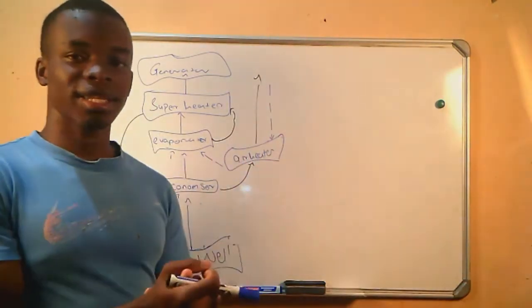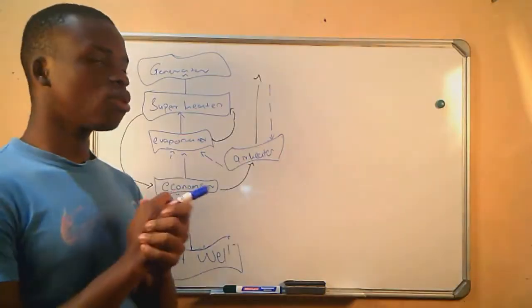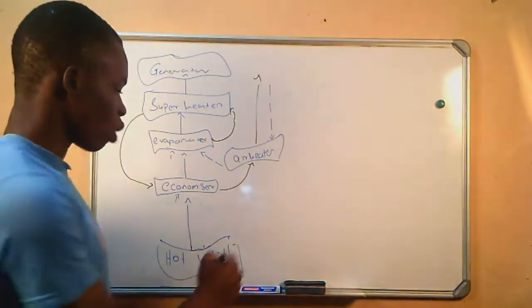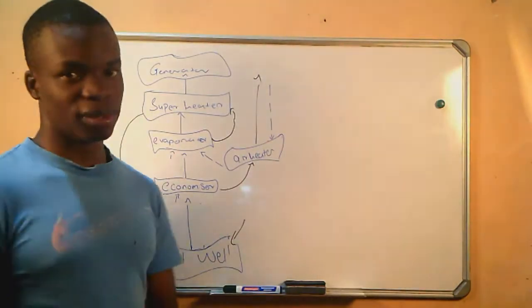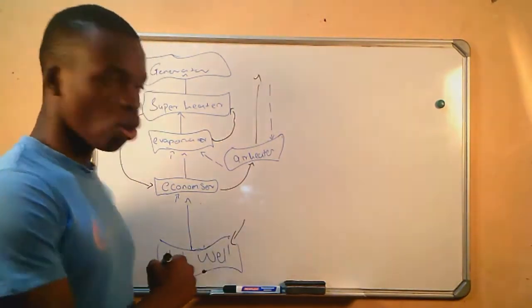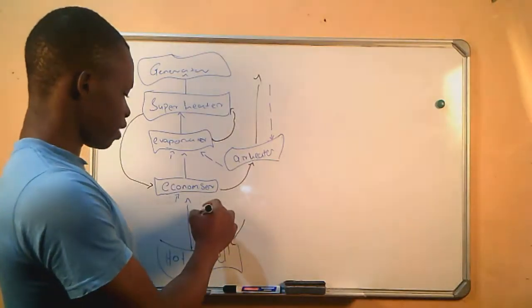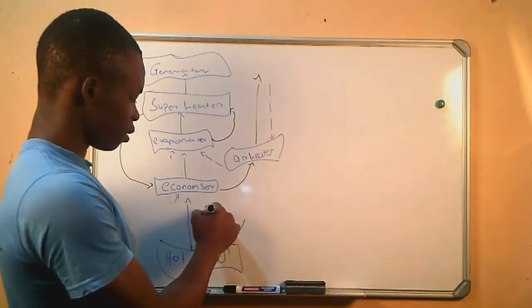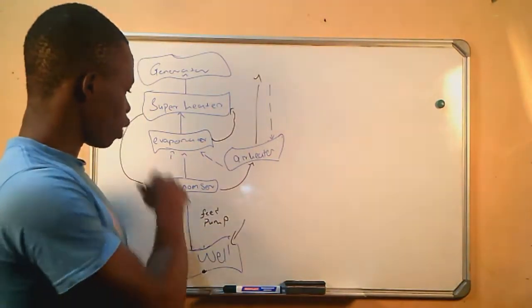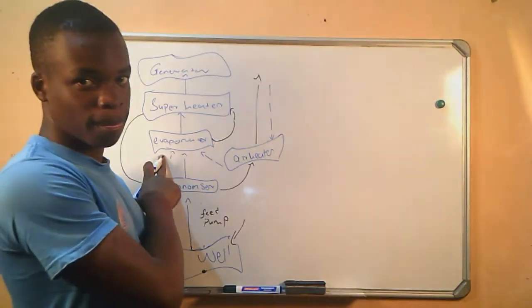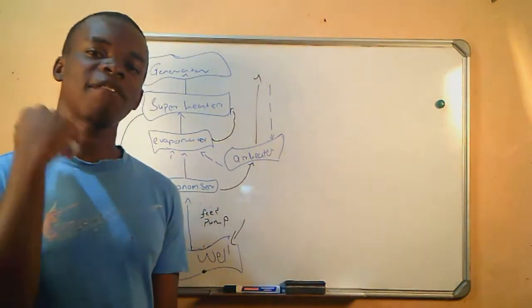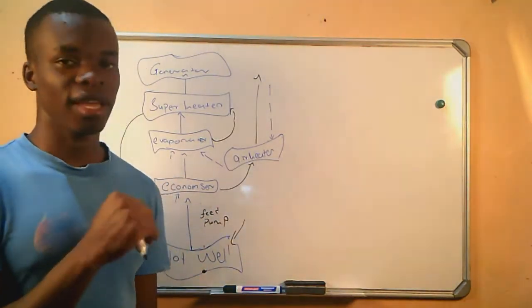We are already familiar with the structure of the plant. We already know that the main purpose of a steam plant is to generate electricity. We use water to achieve that process. Water is stored at the storage we call the hot well. It is pumped using a feed pump from the storage to the evaporator, but first it will pass through an economizer where the first heat energy transfer will take place.